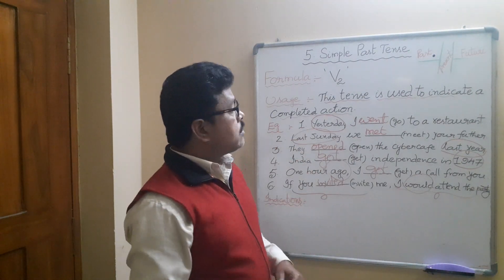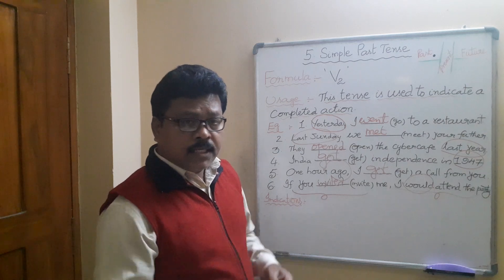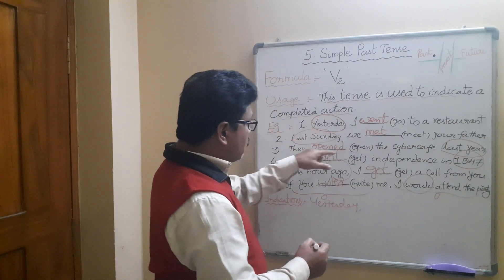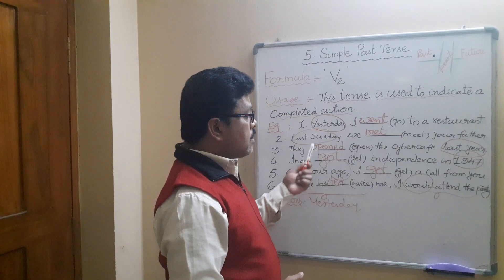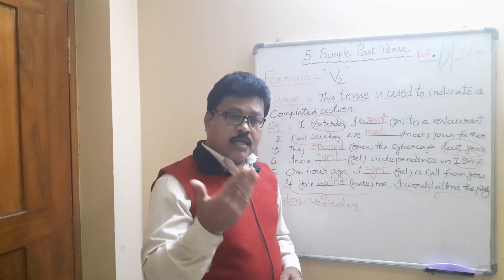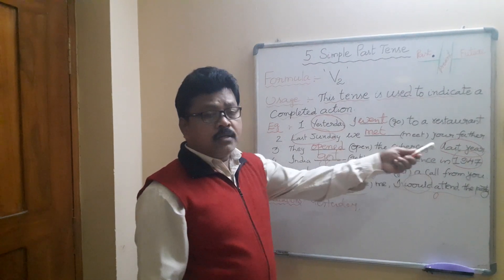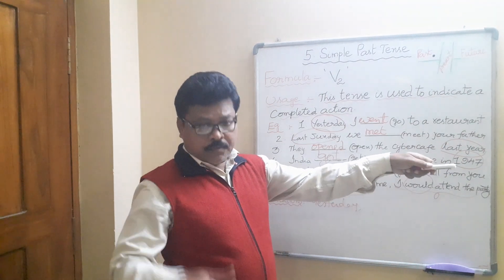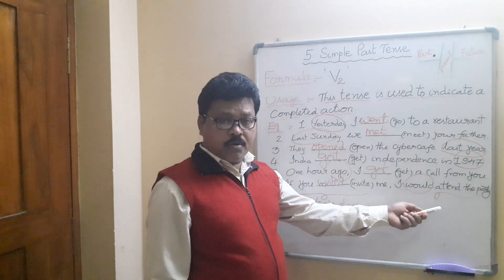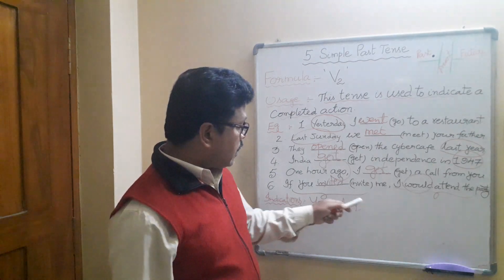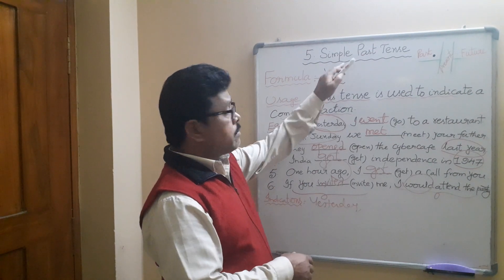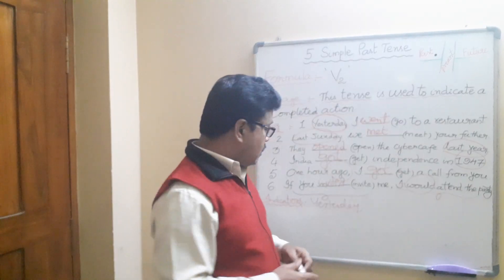These are the indications for simple past tense. The rounded-up words to look for are: yesterday, last Sunday, last Monday, last week, last month, last year, last Ramzan, last Sankranti, last Diwali, specific years like 1947 or 2011 or 2020, and ago. Also, if there is an if-clause with would, should, or could in the main clause — that is Type 2 conditional. If you see any of these words, use V2 — simple past tense.